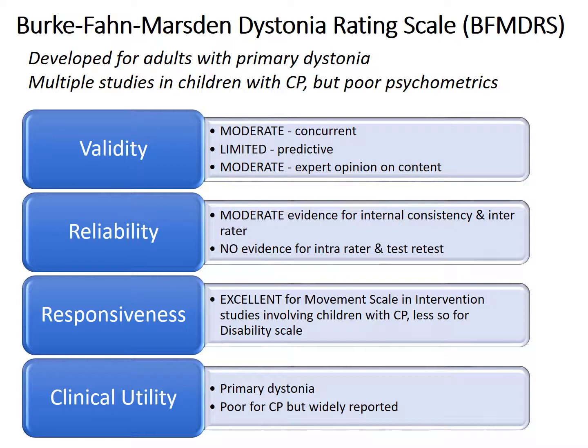The Burke-Fahn-Marsden dystonia rating scale was developed for patients with primary dystonia in 1985. It's been used extensively, particularly in adults and in the deep brain stimulation literature. According to the COSMIN checklist, it has moderate to limited validity and reliability. Excellent responsiveness to change has been demonstrated in a number of studies with children with cerebral palsy.